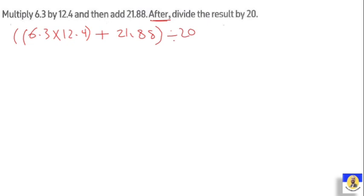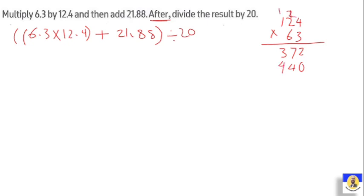When we do 6.3 multiplied by 12.4, we put them under each other. Working through: 3 by 4 is 12, carry 1; 3 by 2 is 6 plus 1 is 7; 3 by 1 is 3. Then 6 by 4 is 24, carry 2; 6 by 2 is 12 plus 2 is 14, carry 1; 6 by 1 is 6 plus 1 is 7. Adding rows with shift gives 78.12. Then place decimal point after 2 digits.